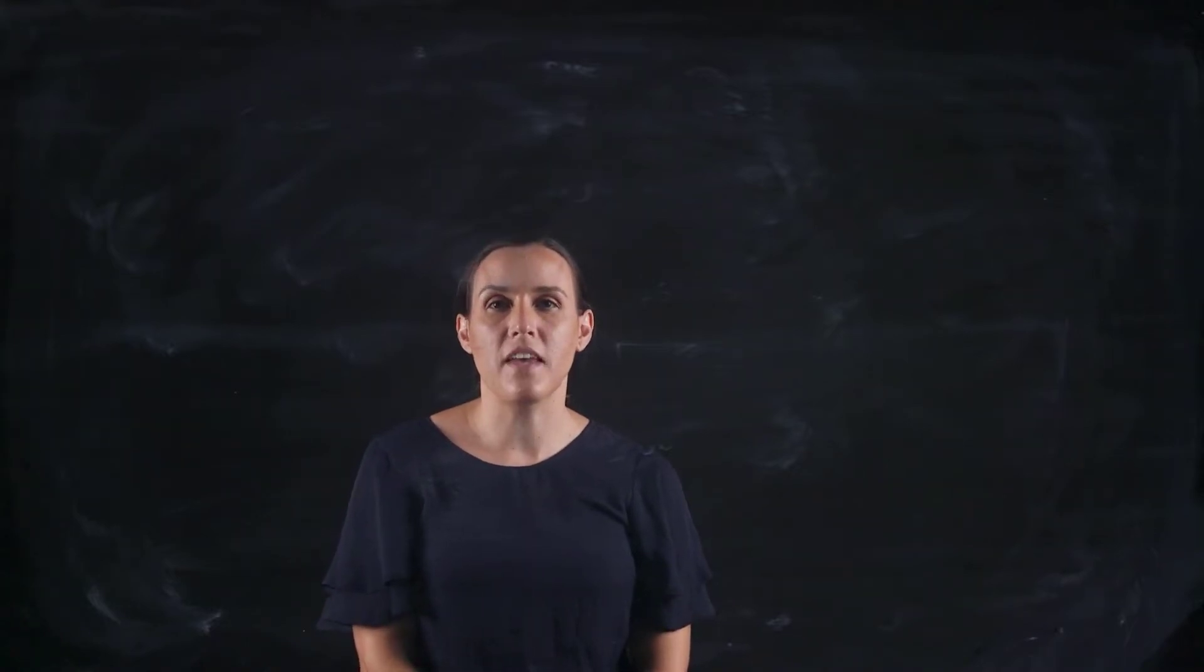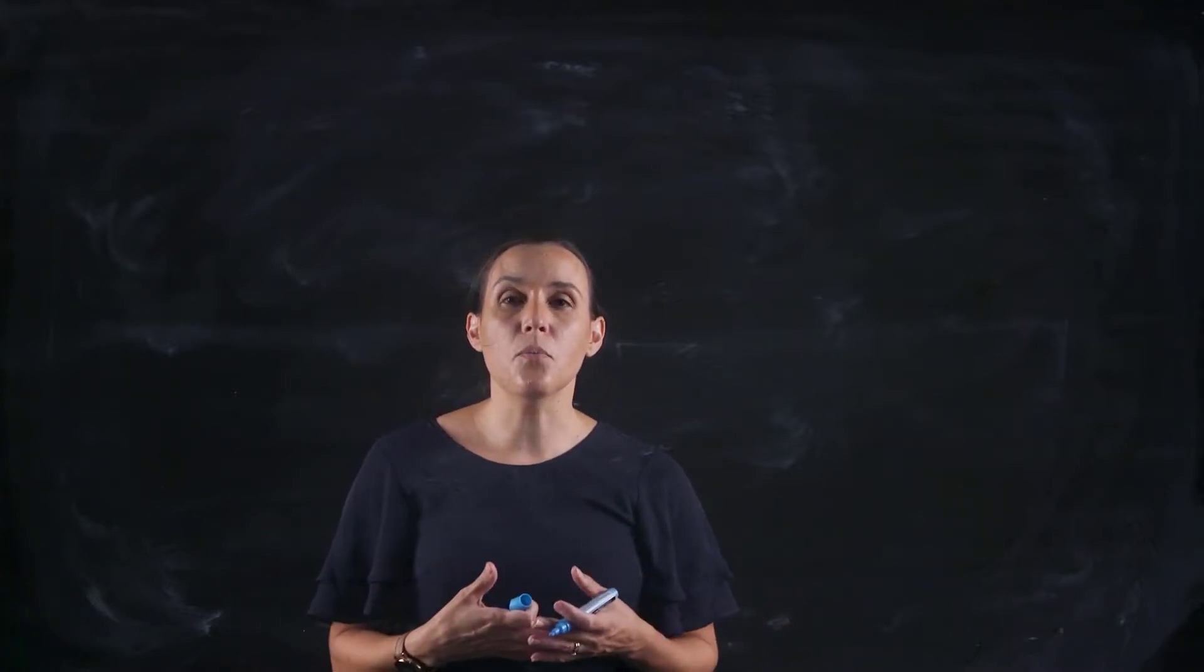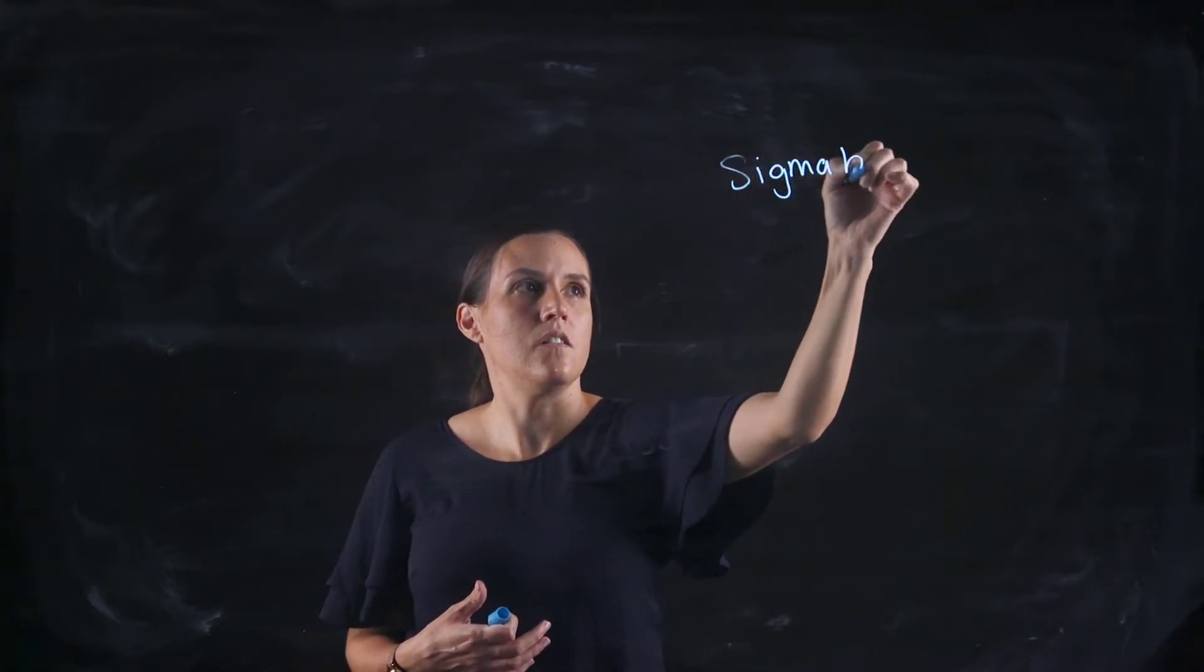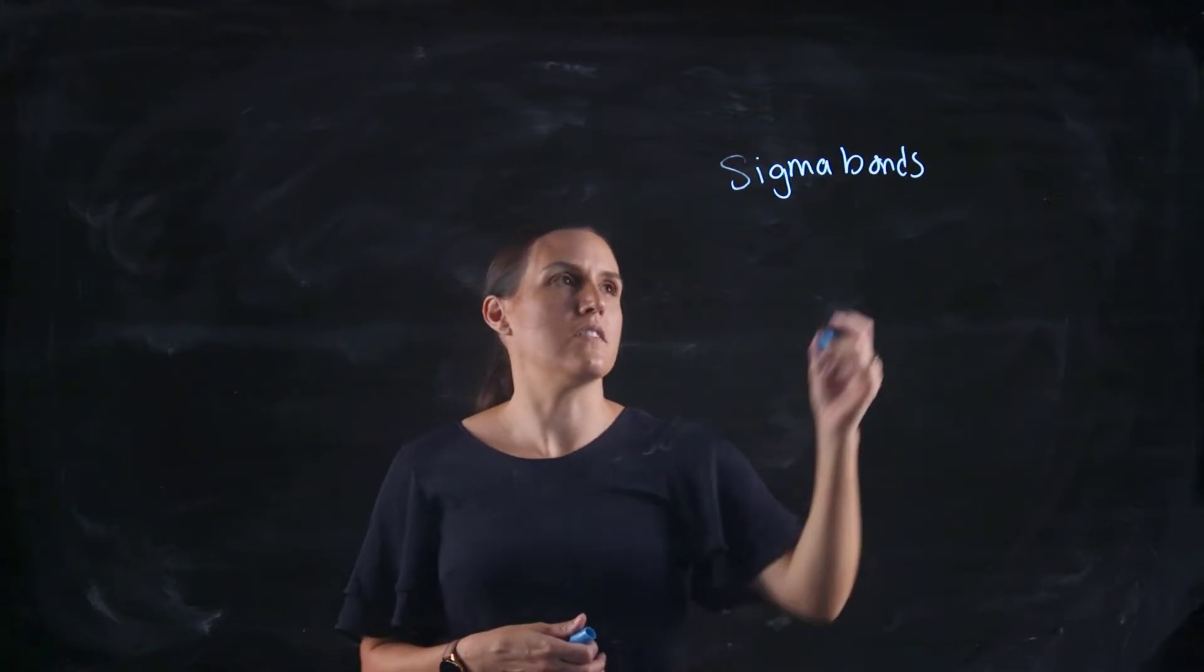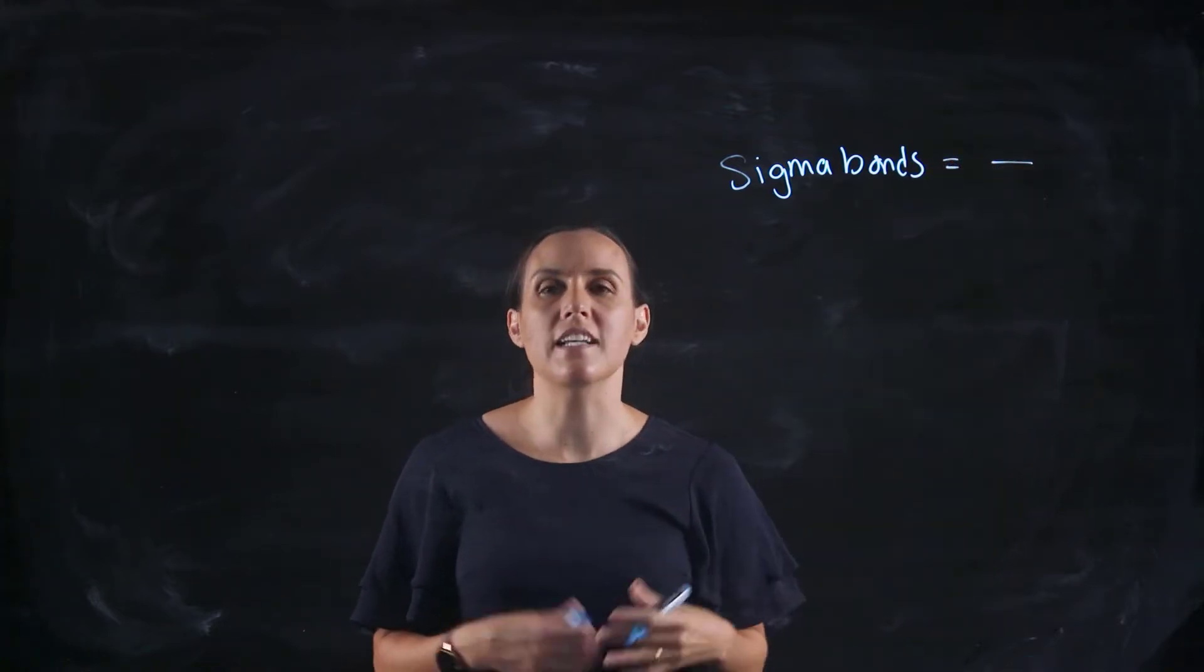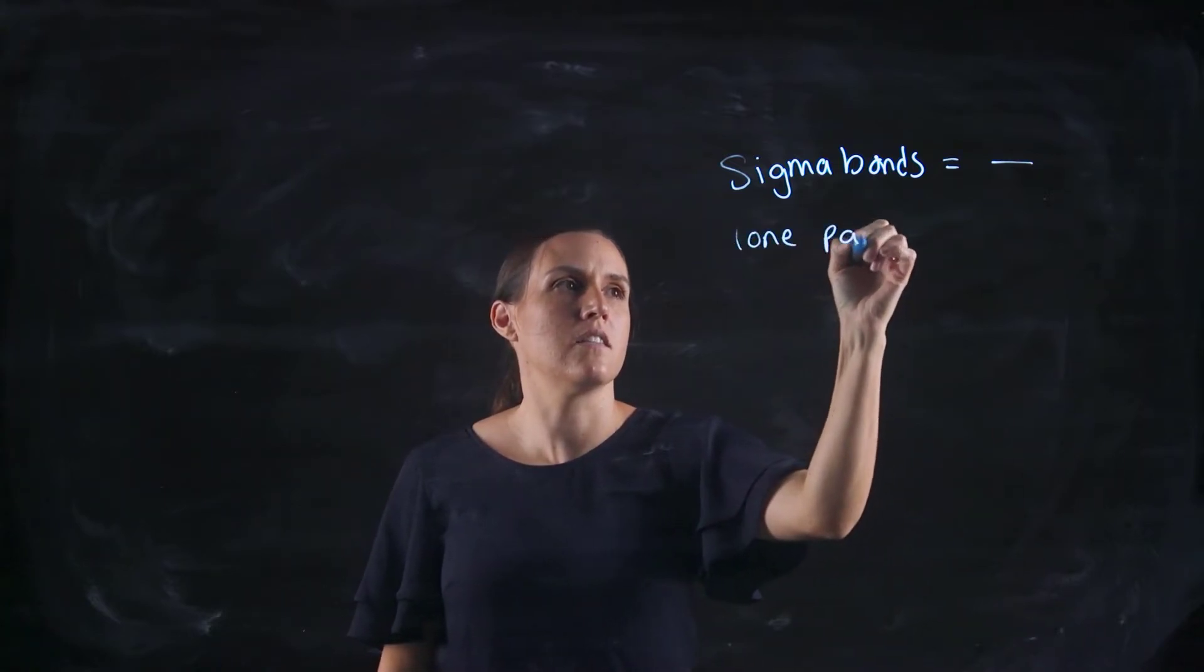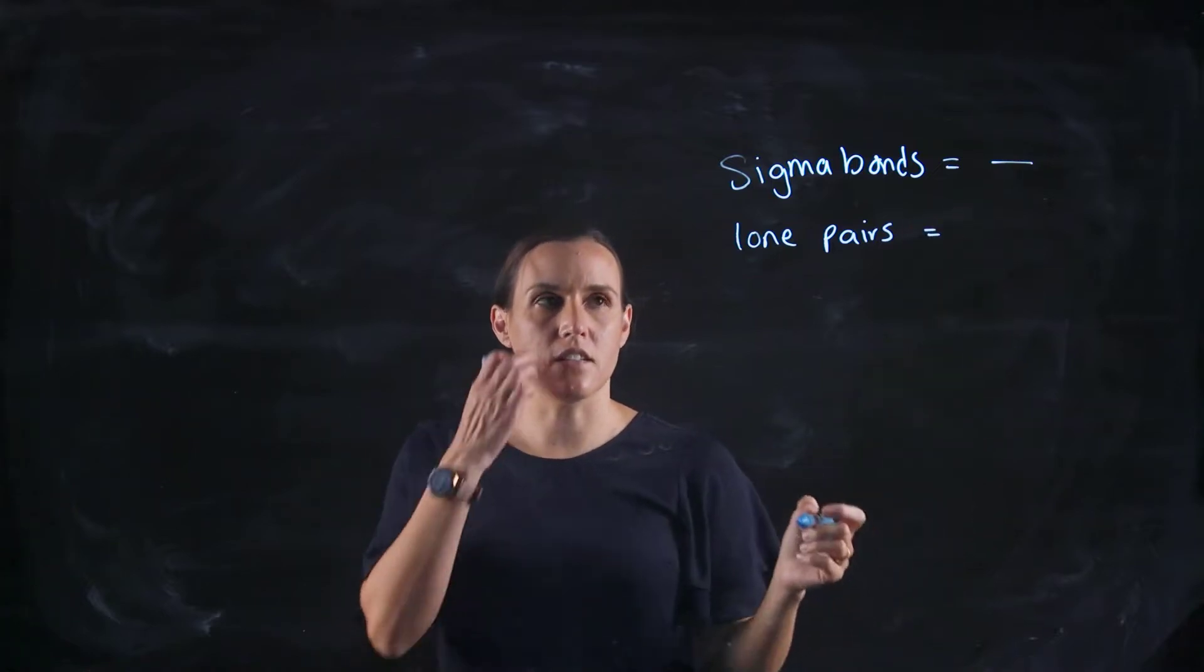So we can call these effective pairs, just to make this simple to discuss. When you're looking at an atom, sigma bonds are your single bonds, so they would just look like single bonds, and you've got your lone pairs, so they will be counted.